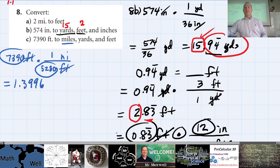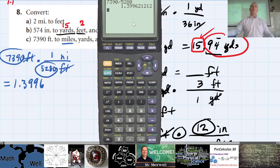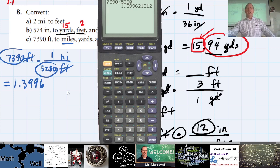On your calculator, try to keep all the decimal places that show up for future calculations until you're done the question. If you round to 1.4 too early, you'll get the wrong answer by the end because we have a series of calculations. Keep as many decimal places as possible.